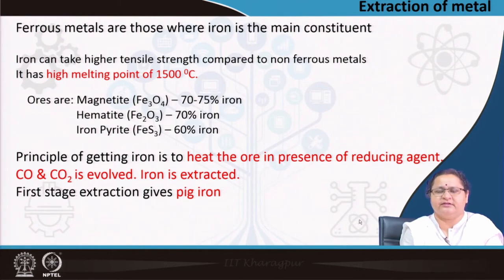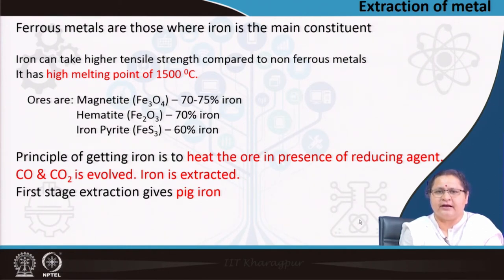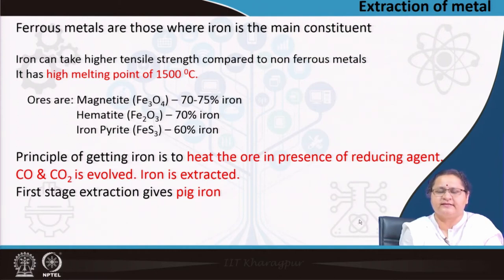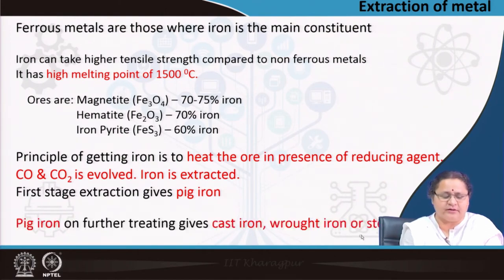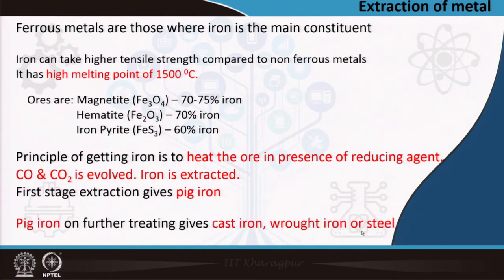This first stage extraction is called pig iron, which is the input to either cast iron, wrought iron, or steel. Pig iron is the first processed form of iron ore, and pig iron can be used for making other irons. It is the starting point — to initiate the production of cast iron, wrought iron, or steel, we need this first extraction from the iron ore. We treat it further and get all other forms.